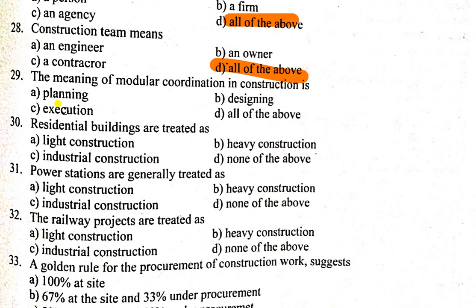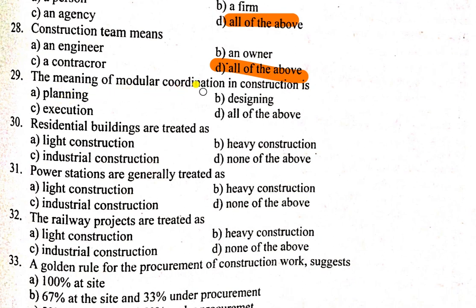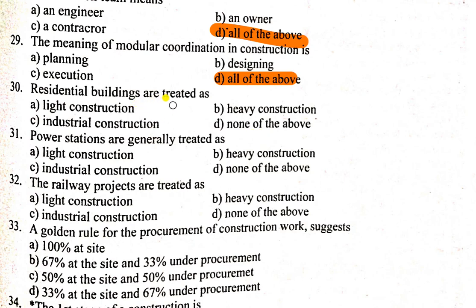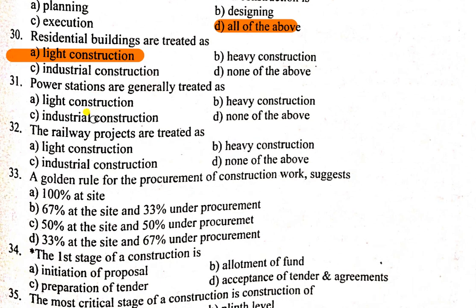Question number 29: The meaning of modular coordination in construction — modular coordination means the planning, designing, and execution process in construction. The correct answer will be option D. Residential buildings are treated as light construction. Power stations are of course industrial construction, and railway projects are heavy construction.